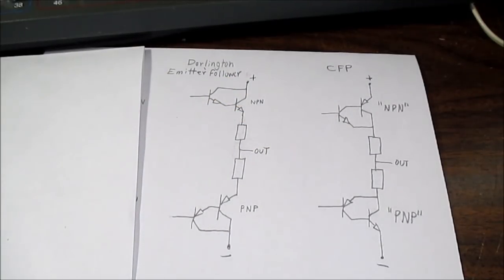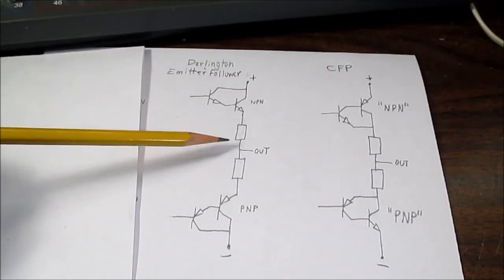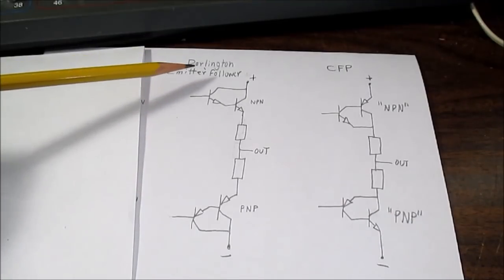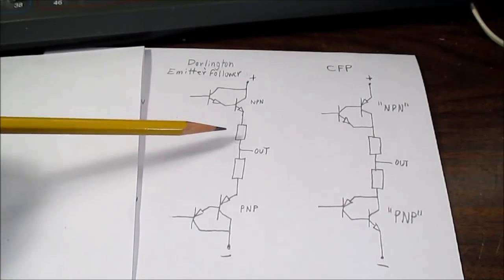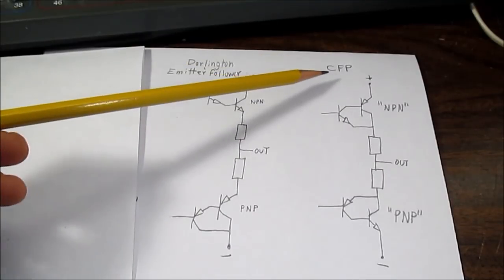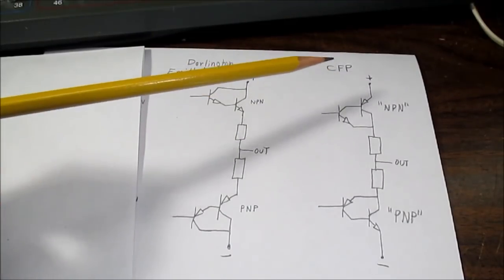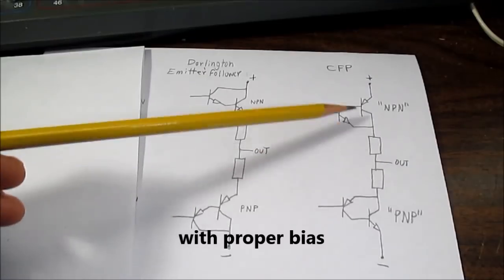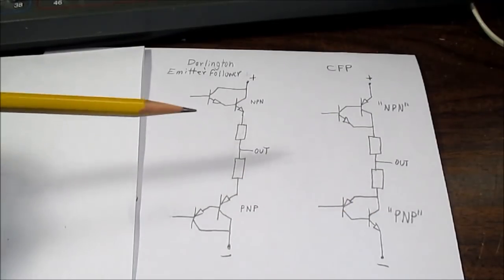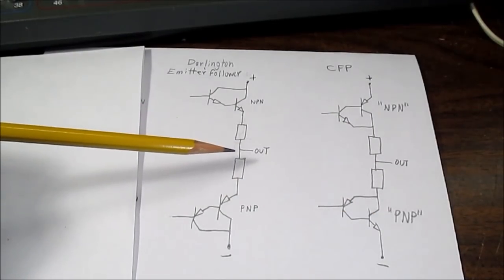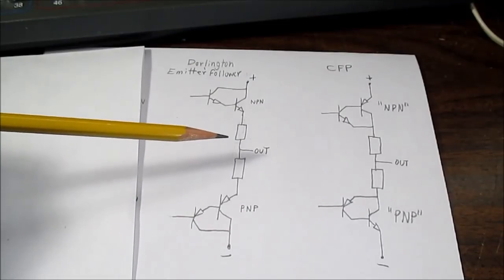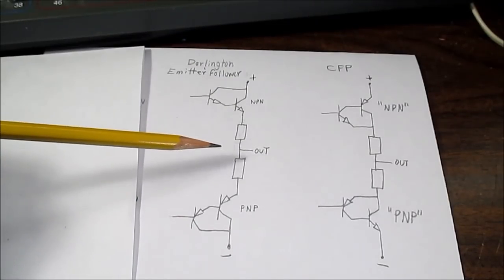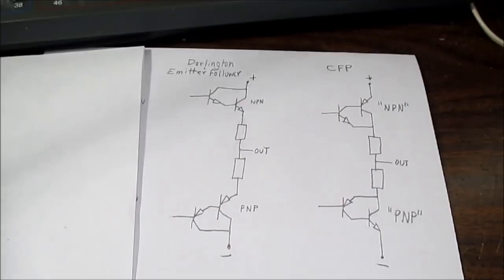Another thing I've read about at low output powers with the Darlington emitter follower, it actually has less distortion than the complementary feedback pair. You know, this has better linearity at higher power. This does better at low power. And you probably do a lot of your serious music listening at a lower power. Unless you like to, you know, crank it up all the time.